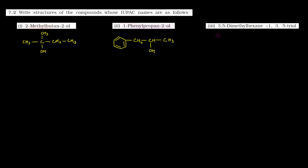Third part mein kya banana hai — 3,5-dimethyl hexane-1,3,5-triol. Sabse pehle hum check karenge word root, kya hai hexane. Toh 6 carbon atoms ki chain bana leni hai: 1, 2, 3, 4, 5, aur 6. Third position par hai CH3 group aur fifth position par bhi CH3. Triol ka matlab hai three OH groups — ek first position par, ek third position par, aur ek fifth position par. Ab hydrogen add kar do: yeh hua CH2, CH2, yahan carbon complete hai, CH2, aur yeh ho jayega CH3. Simple sa tha, ban gaya.